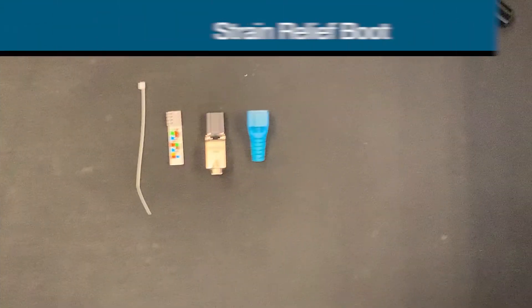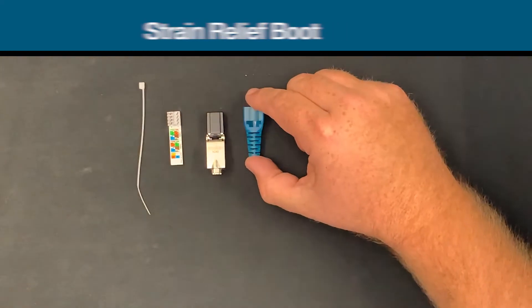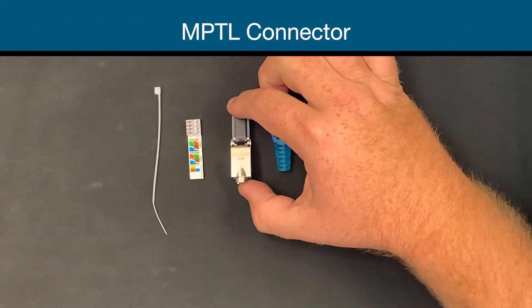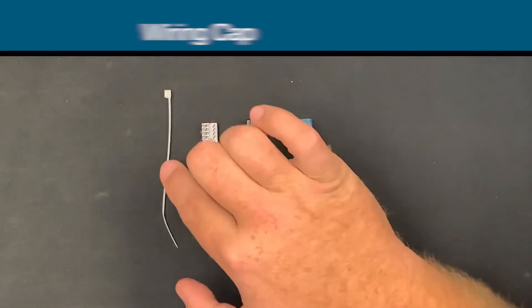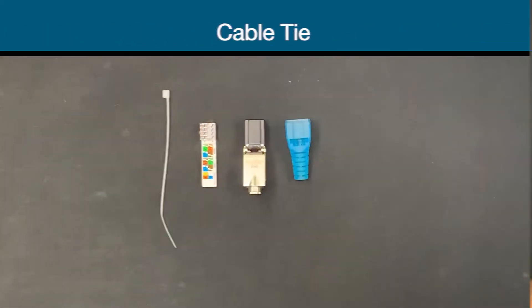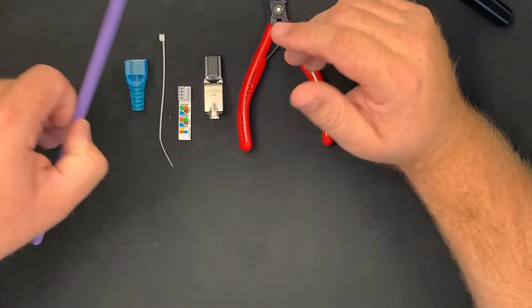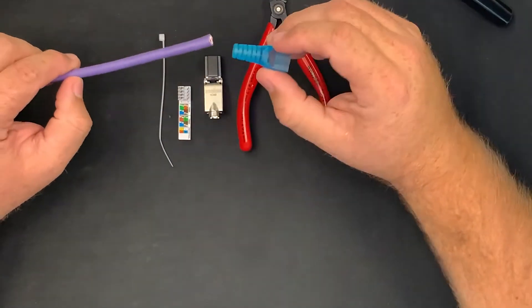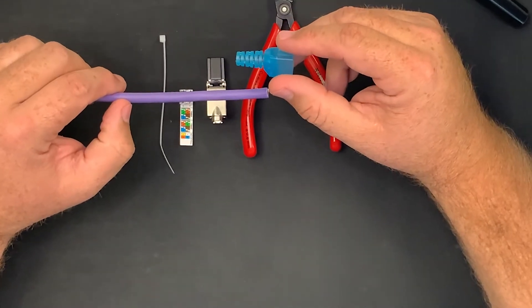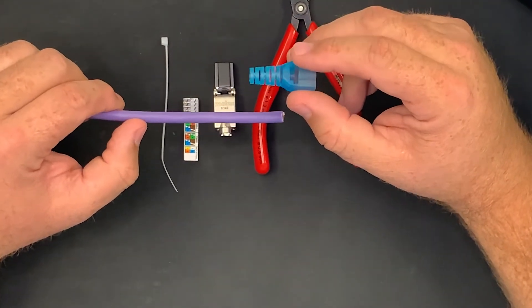Within your MPTL package you will find the strain relief boot, the physical connector itself, the wiring cap with the color schematic and your cable tie. Now, we are going to use the CAT6A shielded cable. Your boot has been designed for CAT5E, CAT6 and CAT6A cable.